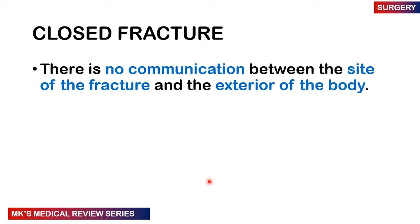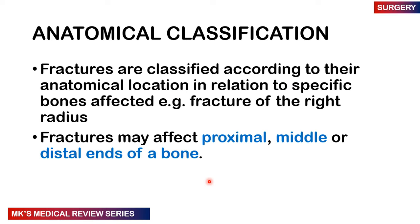You need the patient to be there to determine whether they have an open or closed fracture. Then we have anatomical classification, based on the anatomical location where the fracture has happened — for example, a fracture of the right radius. These can be proximal, middle, or distal ends of the bone. Simply know the anatomical names of the different bones.